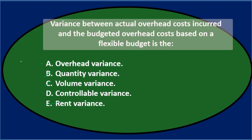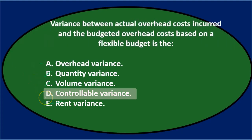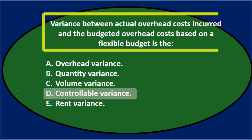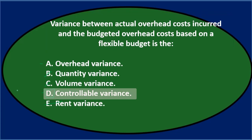So going through this again — the variance between actual overhead costs incurred and budgeted overhead costs based on a flexible budget is either A, the overhead variance, or D, the controllable variance. Of those two, the answer is D, the controllable variance. Final answer: the variance between actual overhead costs incurred and the budgeted overhead costs based on a flexible budget is D, the controllable variance.